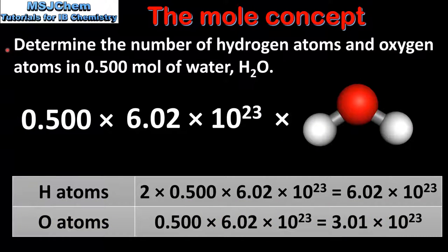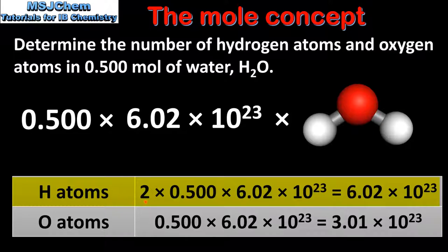In our next example we'll determine the number of hydrogen atoms and oxygen atoms in 0.5 moles of water. One water molecule consists of one oxygen atom and two hydrogen atoms. In 0.5 moles of water we have 0.5 times 6.02 x 10 to the 23 water molecules. So for the number of hydrogen atoms we multiply 2 times 0.5 times the Avogadro constant, which gives a total of 6.02 x 10 to the 23 hydrogen atoms. For the number of oxygen atoms we multiply 0.5 by the Avogadro constant, which gives 3.01 x 10 to the 23 oxygen atoms.